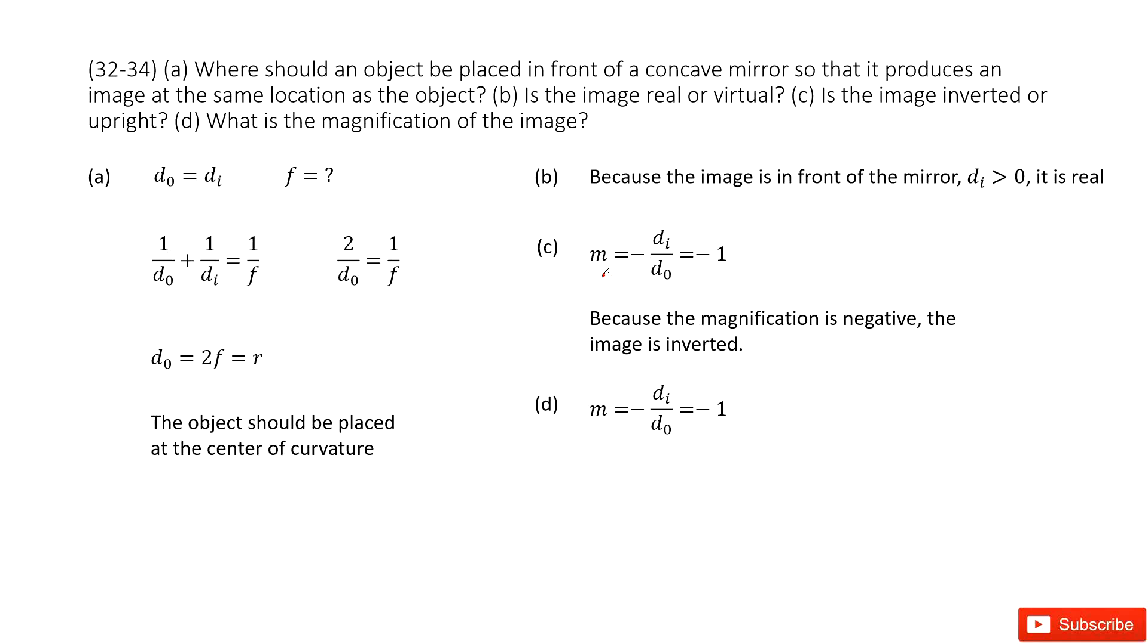Chapter 32 is about light and reflection. Now you can see we have a mirror. The object is placed in front of it, and we know the distance of the object equals the distance of the image.